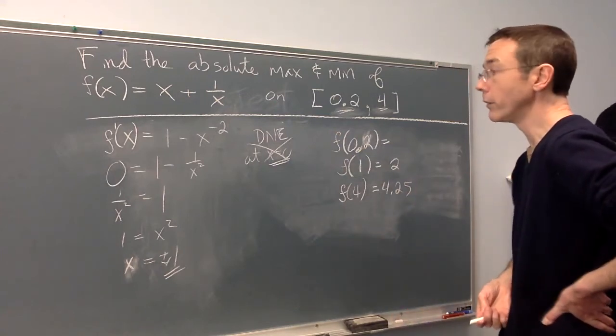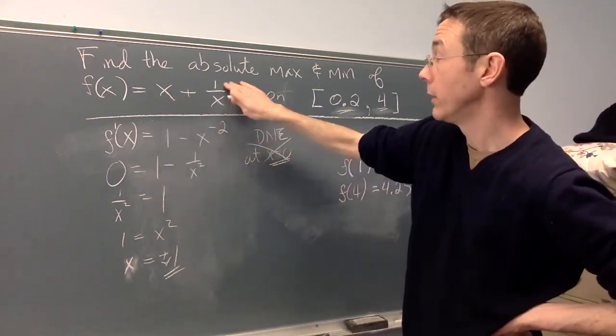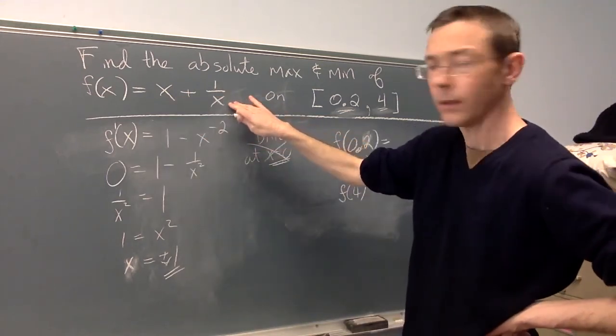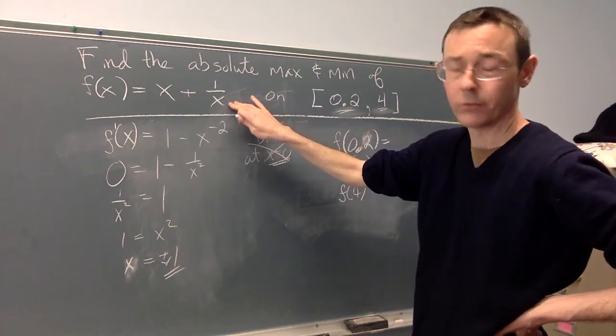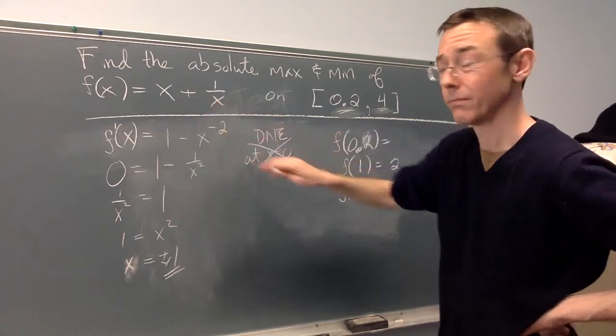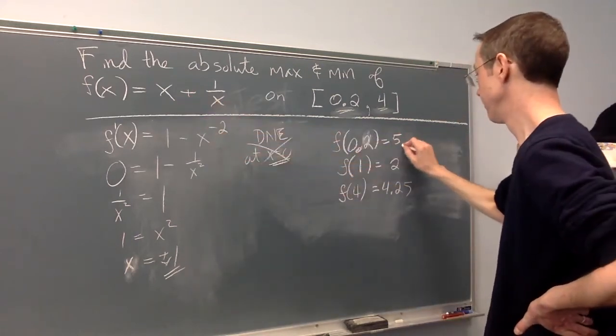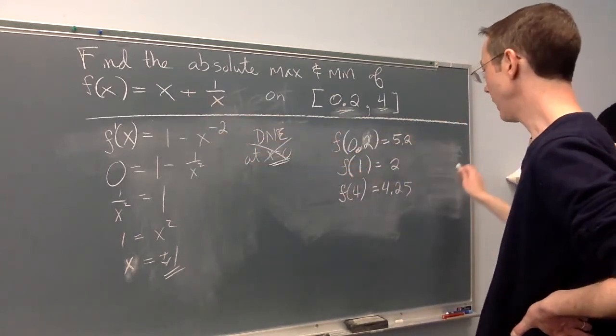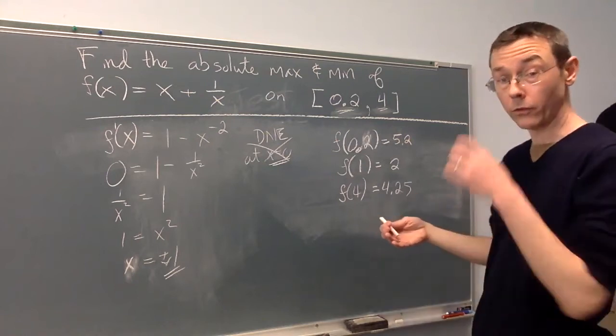Finally, for 0.2. Well, here we get 0.2. Here we have 1 over 0.2. I'm going to use the fact that I know 0.2 is a fifth. So 1 over a fifth is 5. I'm getting 5.2. Okay, now we're ready to make some decisions and draw some conclusions.